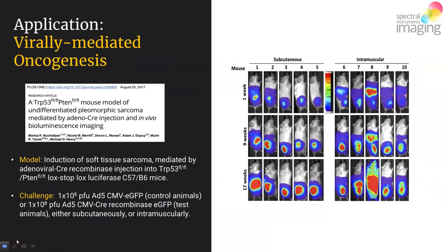The final application study presented is an example of virally mediated oncogenesis, where investigators used a luciferase optical reporter to monitor the extent of tumor progression in their mouse model system. They wanted to induce the formation of a soft tissue sarcoma using a lysogenic viral particle construct — specifically, adenoviral pre-recombinants modified to express interrupter sequences that would prevent effective transcription of two important growth regulatory proteins: TP53 and PTEN.